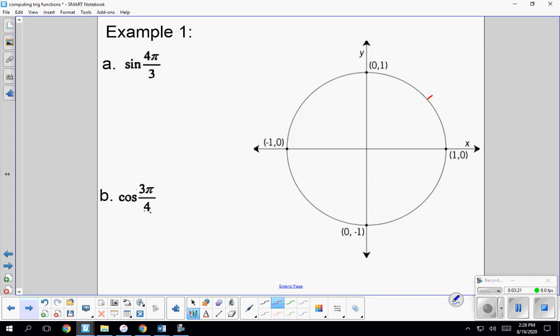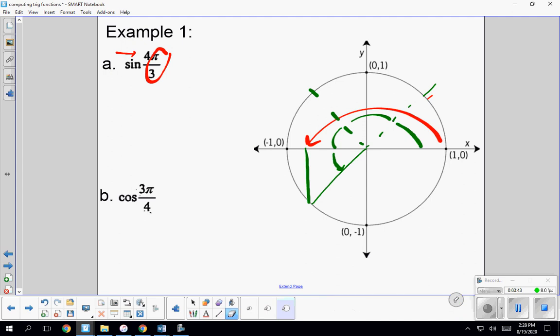So example one. It's asking us to compute the sine of four pi over three. I like to look at this as pi over three, and I'm going to have four of those. So if I took pi and I divided it into three pieces, this is kind of what I would get. And so since I do that four times, I go one, two, three, four. So this has created that special right triangle.